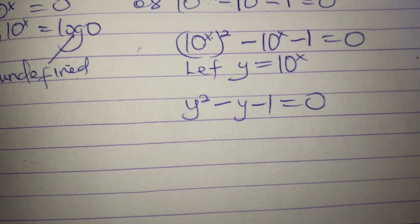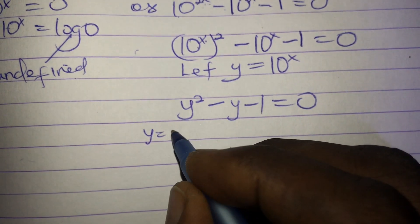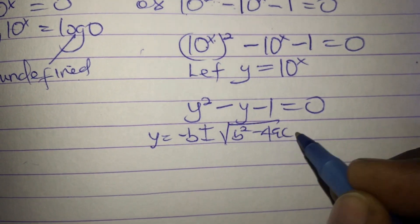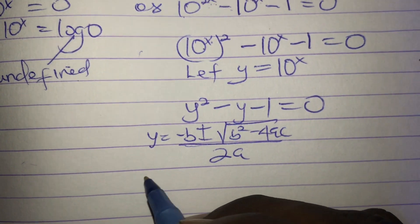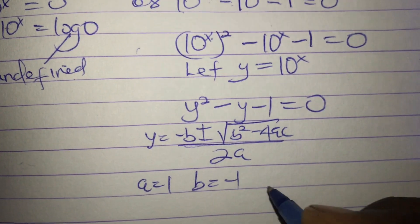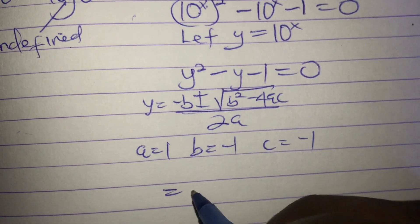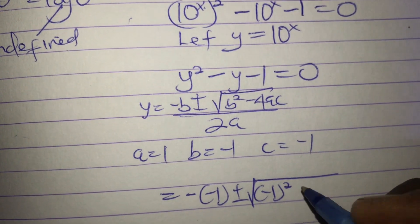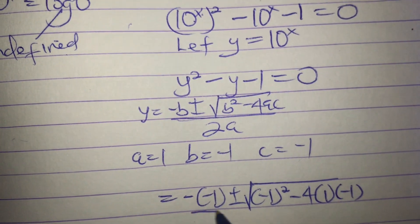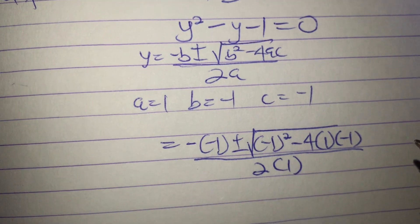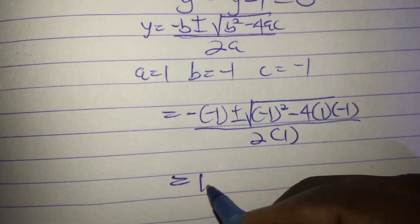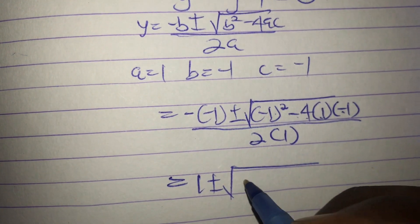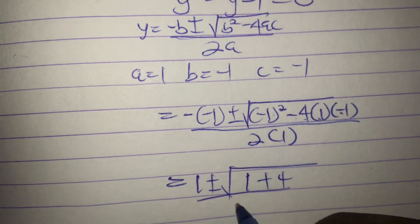Using the quadratic formula: y equals negative b plus or minus the square root of (b squared minus 4ac), all divided by 2a. Here, a equals 1, b equals negative 1, c equals negative 1. Substituting: y equals 1 plus or minus the square root of (negative 1 squared minus 4 times 1 times negative 1), divided by 2 times 1. That simplifies to 1 plus or minus the square root of (1 plus 4), giving root 5.